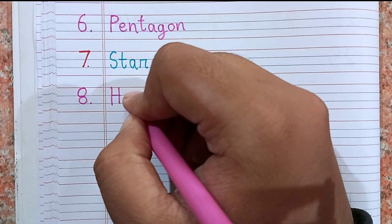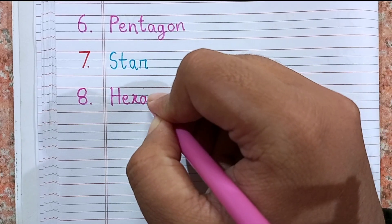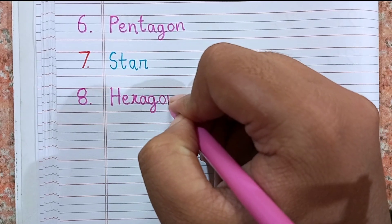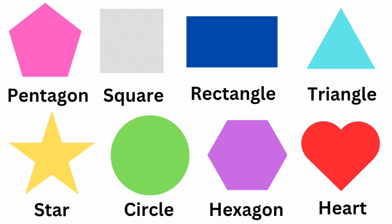Hexagon. This is hexagon shape. So today in this video we have learned the spelling of pentagon P-E-N-T-A-G-O-N, square S-Q-U-A-R-E, rectangle R-E-C-T-A-N-G-L-E, triangle T-R-I-A-N-G-L-E.